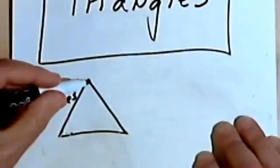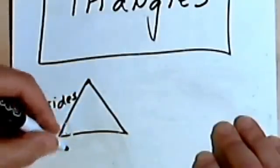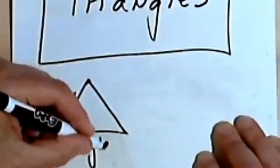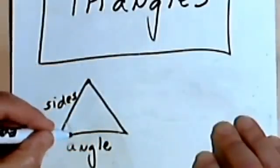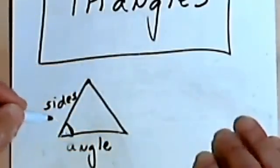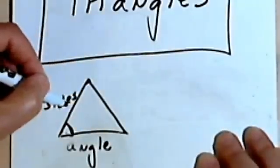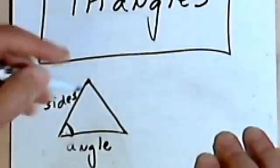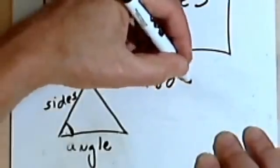Each of the three places where the lines meet is an angle. Now we measure the angles in degrees. The three angles of any triangle are going to add up to 180 degrees.